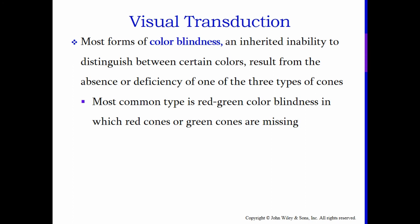Most forms of color blindness are an inherited inability to distinguish between certain colors. It results from the absence or deficiency of one of the three types of cones, with red-green being the most common. This doesn't mean that red or green is invisible to that individual — it simply means they can't distinguish between red and green. To them, anything that's red or green to someone with normal vision appears to be about the same color — as best as I can tell, it's kind of a brownish color.